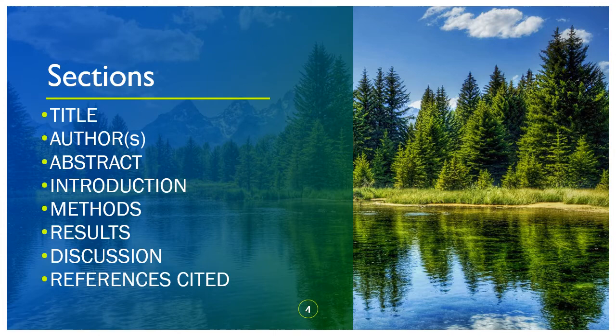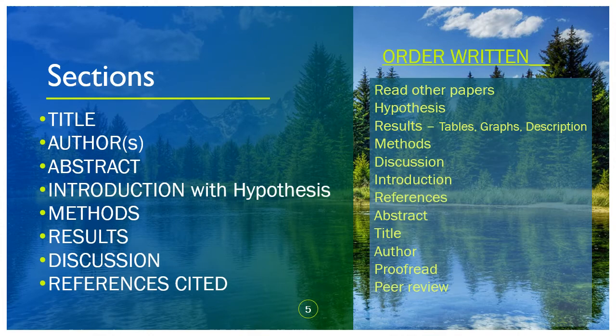The sections of a lab report — you probably already know this. You've got the Title, Authors, Abstract, Introduction, Methods, Results, Discussion, and References Cited. I'm going to go over all of these. There's also a document in our course on guidelines to lab reports that goes over details on each of these sections.